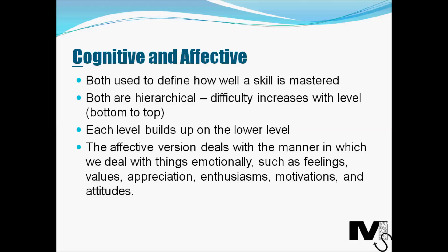So how is the affective version actually different from the cognitive version? The affective version deals with the manner in which we deal with things emotionally — what emotions we attribute to the knowledge being imparted. Things like feelings, values, appreciation, enthusiasm, motivations, and attitudes form the basis of the affective version of the taxonomy.